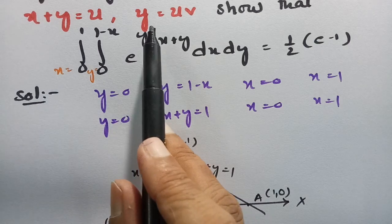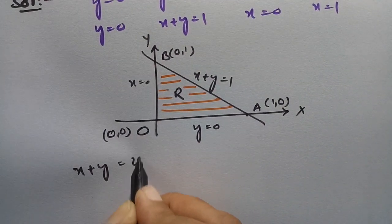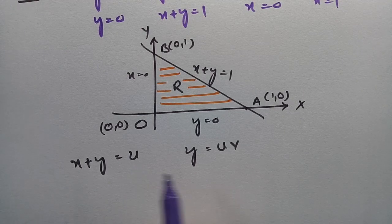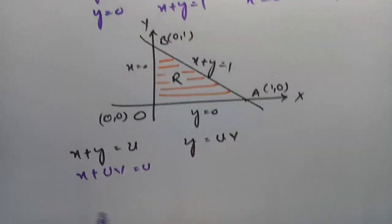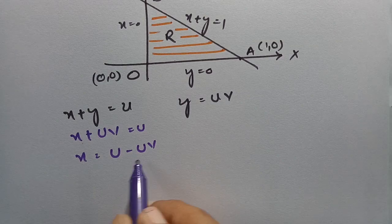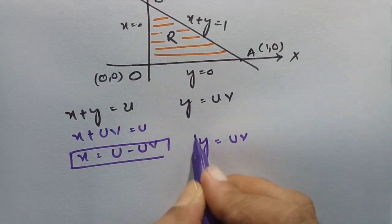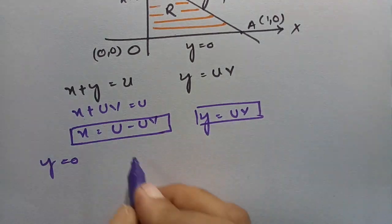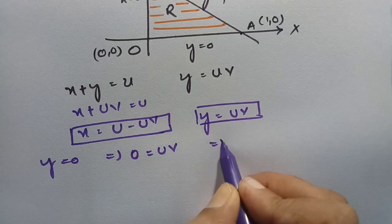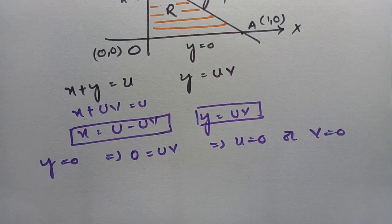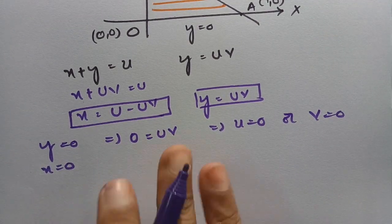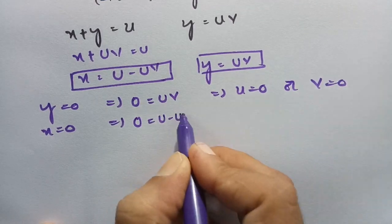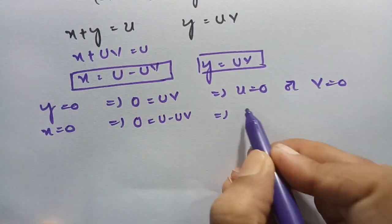From the transformation: x plus y equals u and y equals uv. So y equals uv and x equals u minus uv. Substituting y equals 0 gives uv equals 0, so u equals 0 or v equals 0. Substituting x equals 0 gives u minus uv equals 0, so taking u common: u(1 minus v) equals 0, which implies u equals 0 or v equals 1.